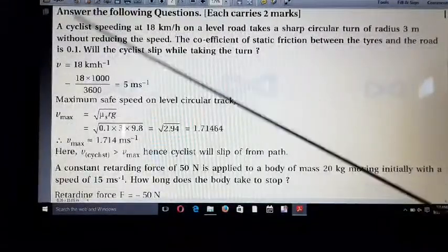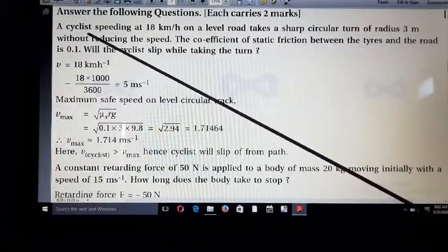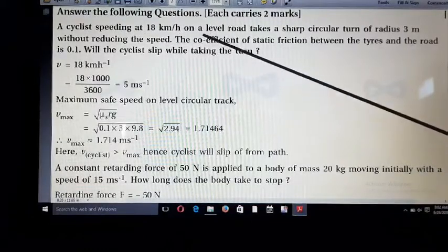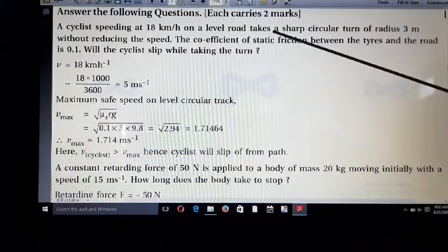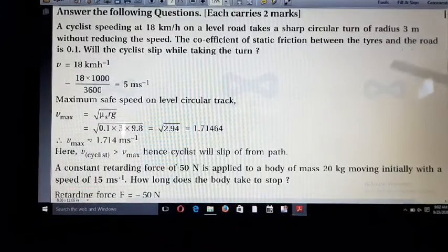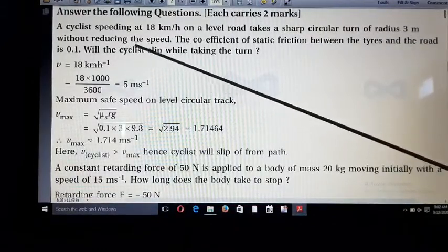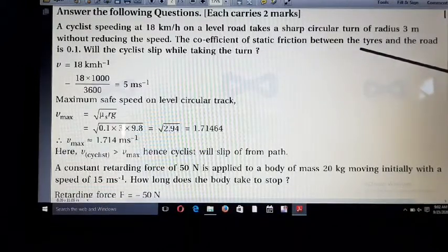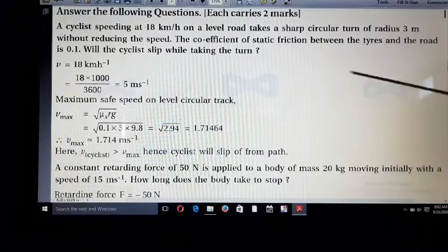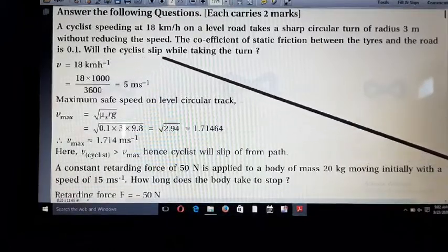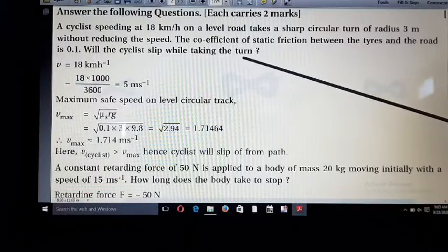Next, illustration number: A cyclist speeding at 80 km per hour on a level road takes a sharp circular turn of radius 3 meter without reducing the speed. The coefficient of static friction between the tire and the road is 0.1. Will the cyclist slip while taking the turn?